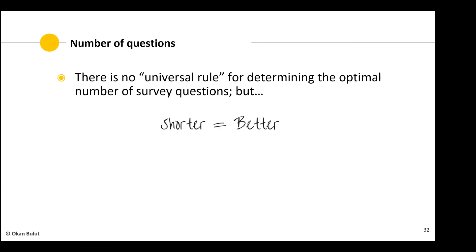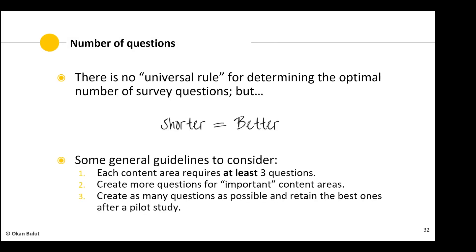The number of questions is an important item. There's no universal rule — it depends on who's taking your survey, how motivated they'll be, and how many content areas you're covering. In general, the shorter the better: ask fewer questions and keep them concise. Each content area requires at least three high quality questions — not just any three questions, but three high quality ones. So depending on how many content areas your survey covers, multiply accordingly.